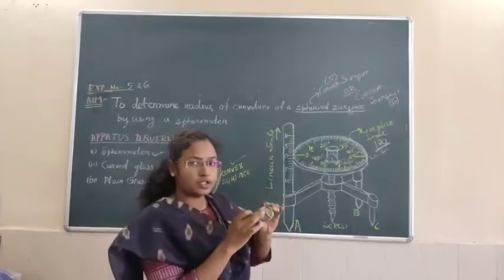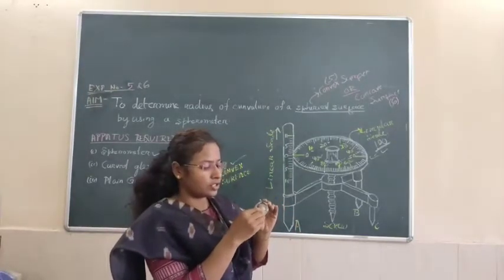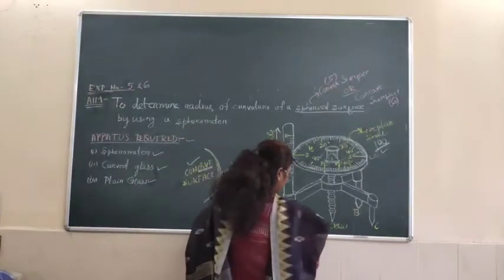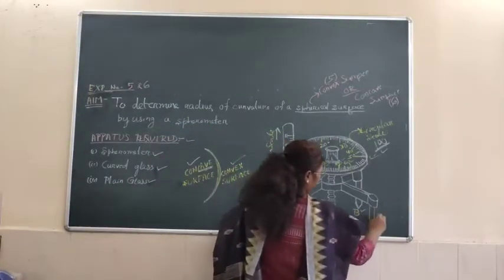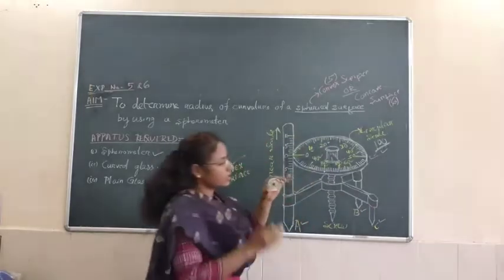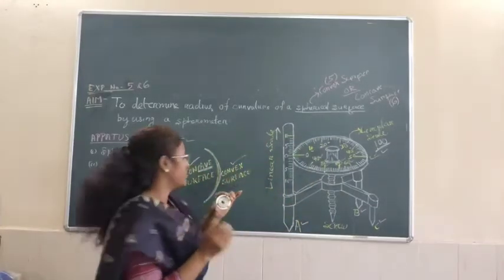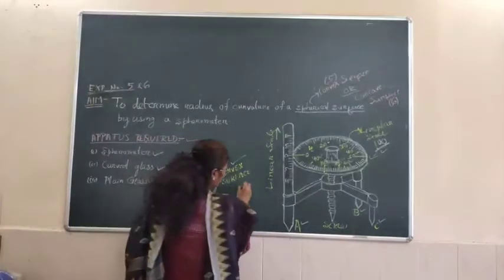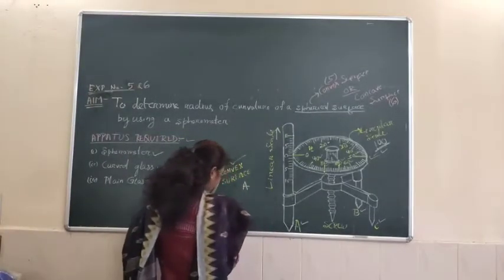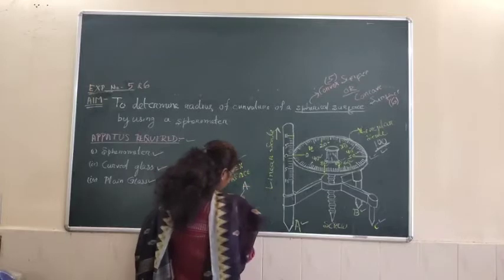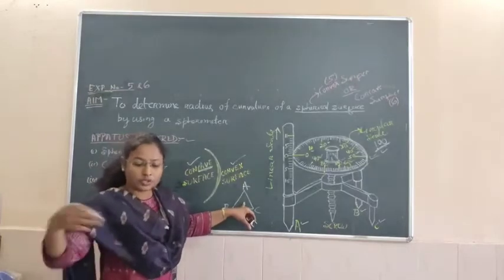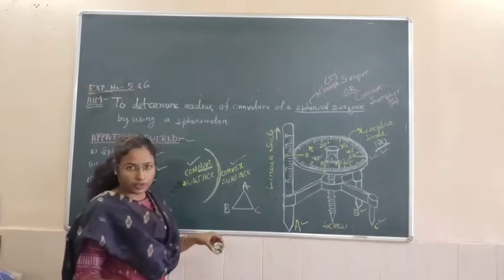Apart from this screw, there are three feet here — one, two, three — which we denote as foot A, B, and C. As you can see, these three points A, B, and C will make a triangle. These three points will form a triangle, and the significance of this triangle we will use in the theory part.